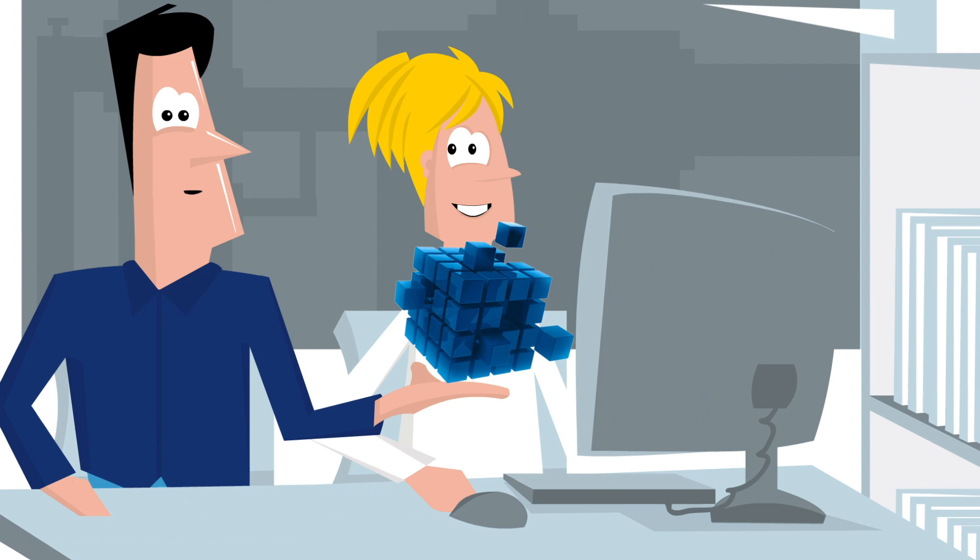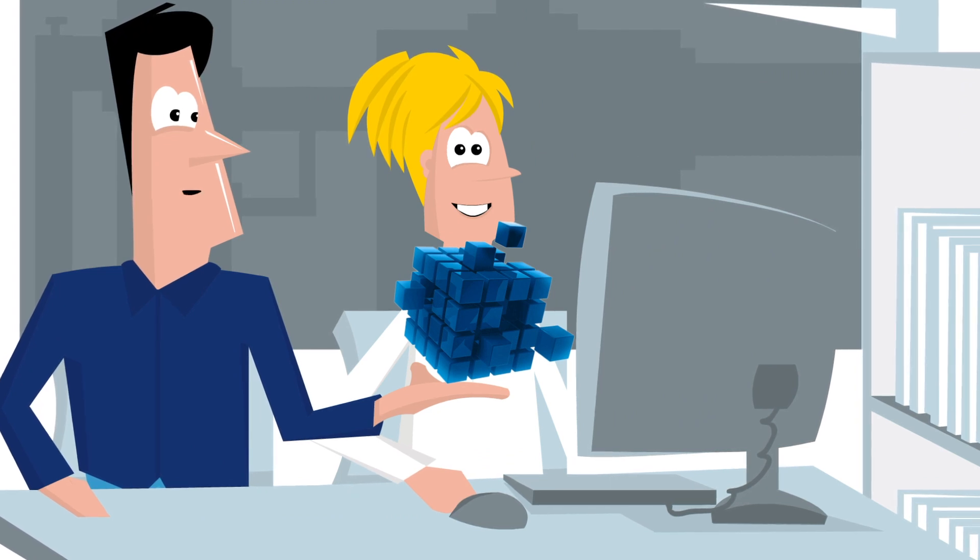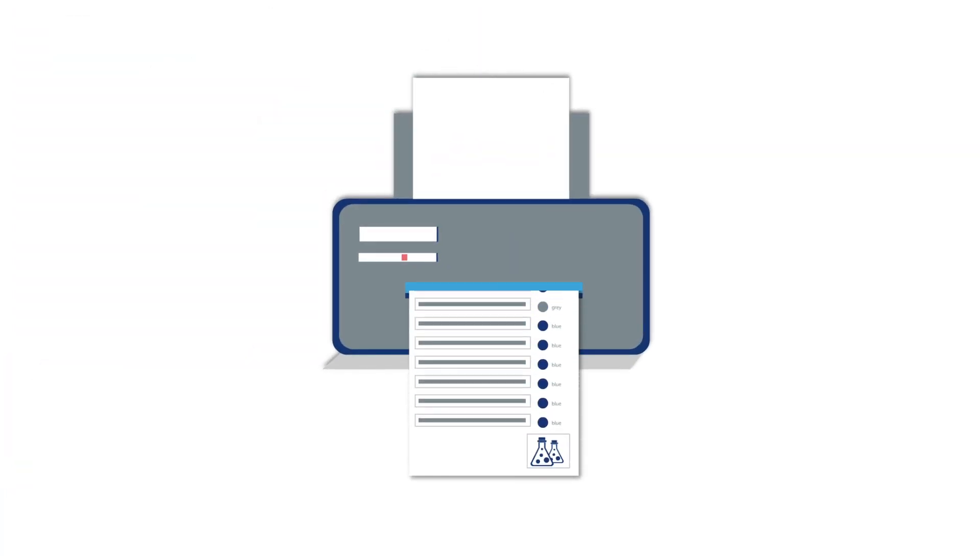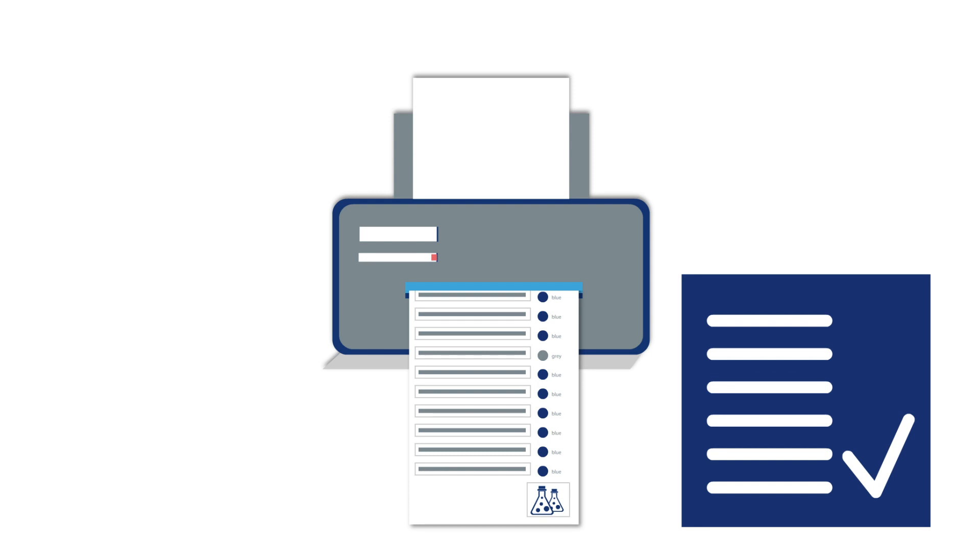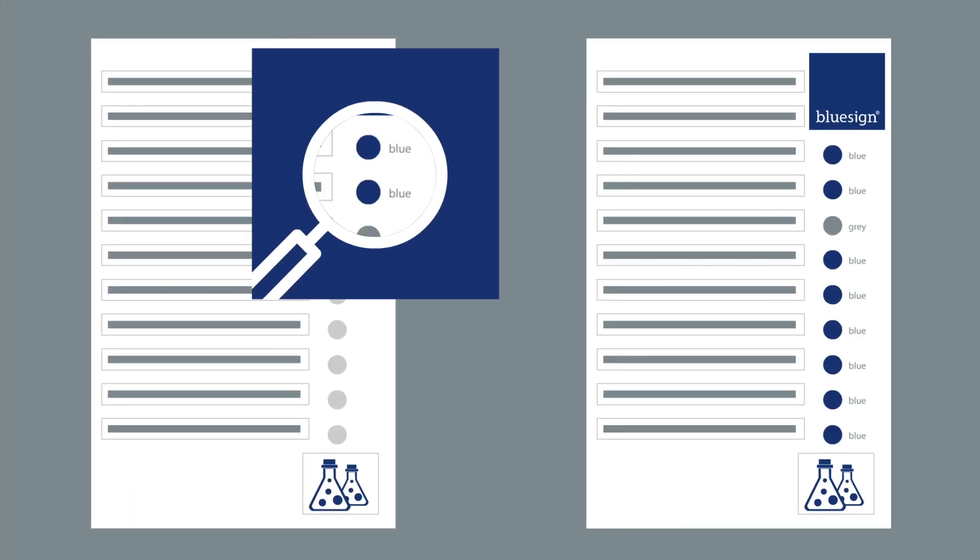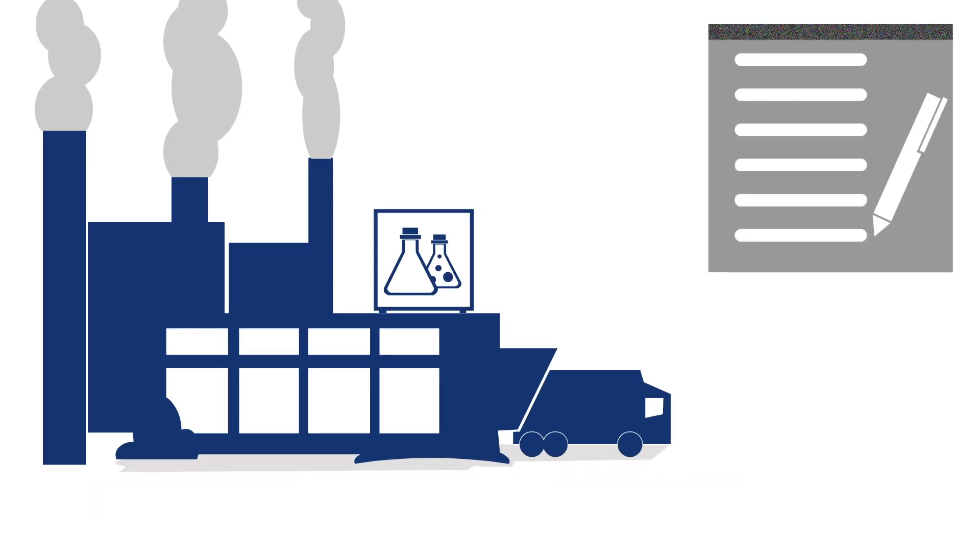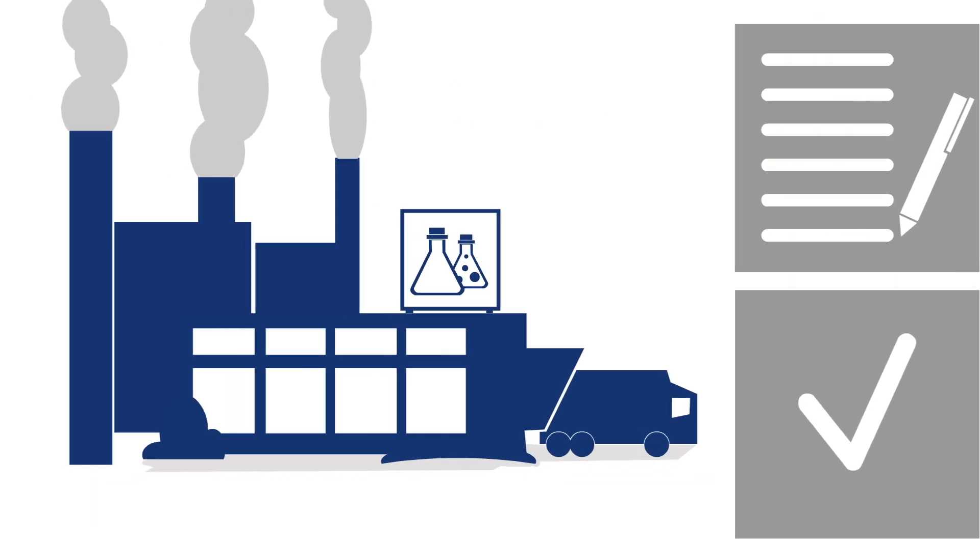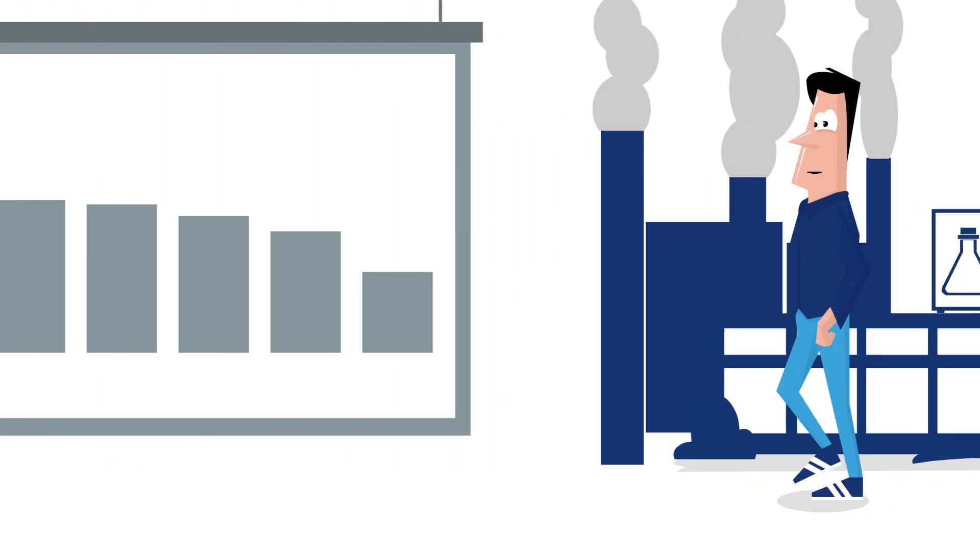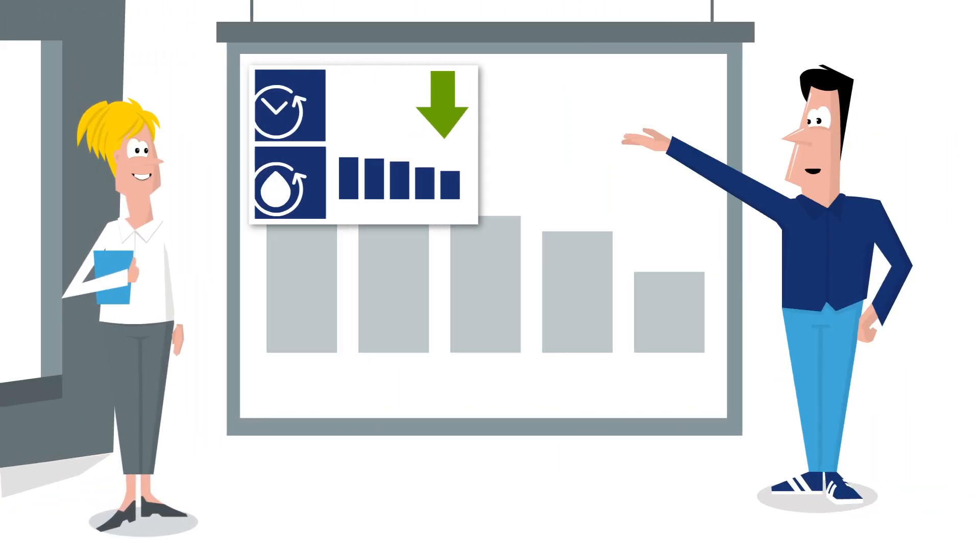And BlueSign Cube can do even more. For example, you can have your requested chemical stock lists verified. They are automatically compared with BlueSign's positive list. The chemical products have been registered by the manufacturers and independently tested and evaluated by BlueSign. You can also save resources and costs with these smart chemical products and optimize manufacturing processes.